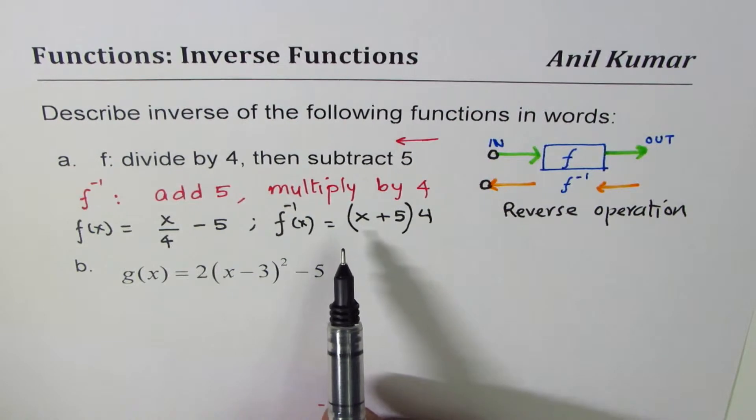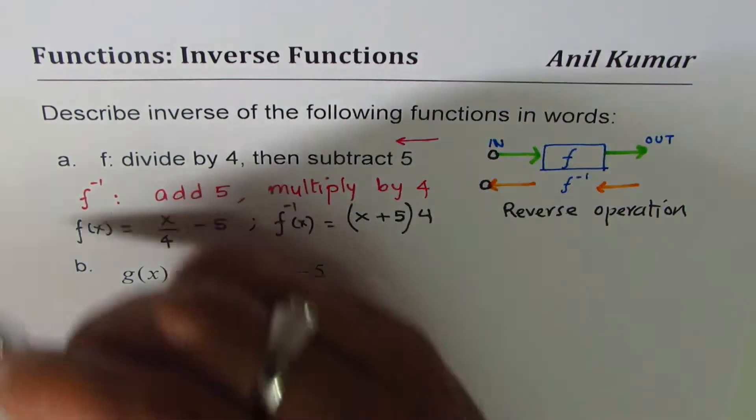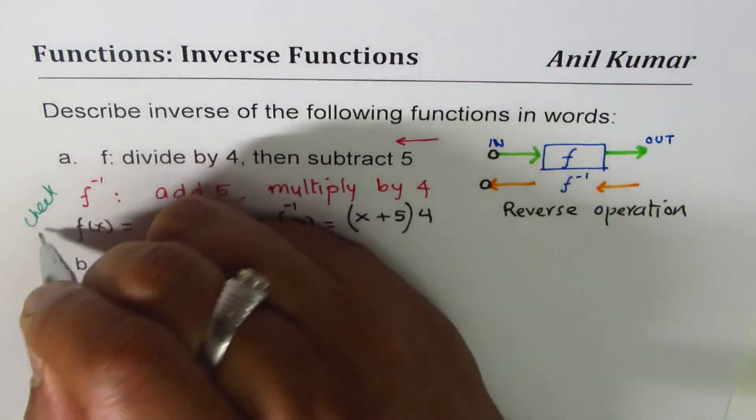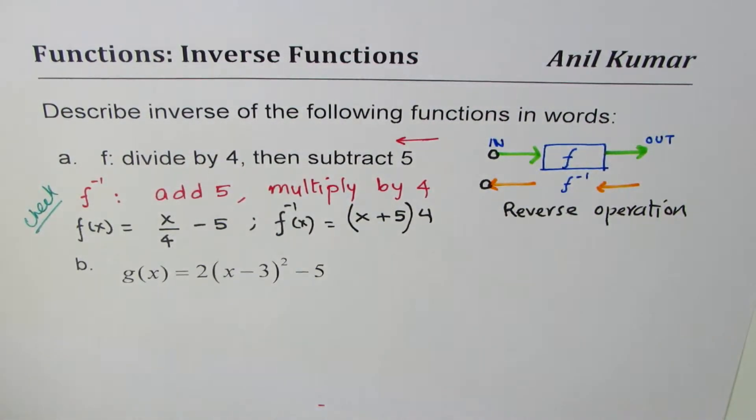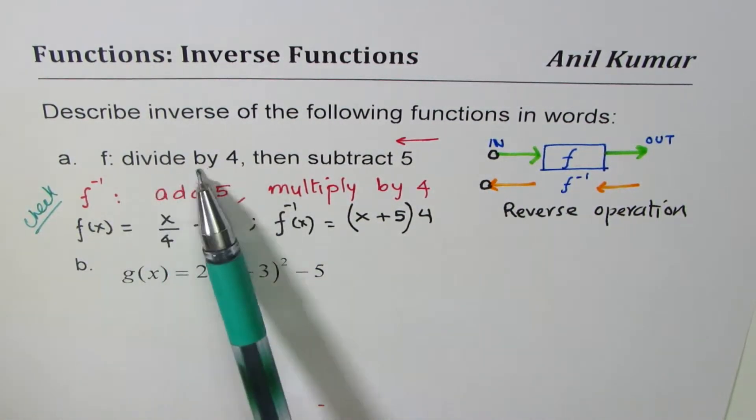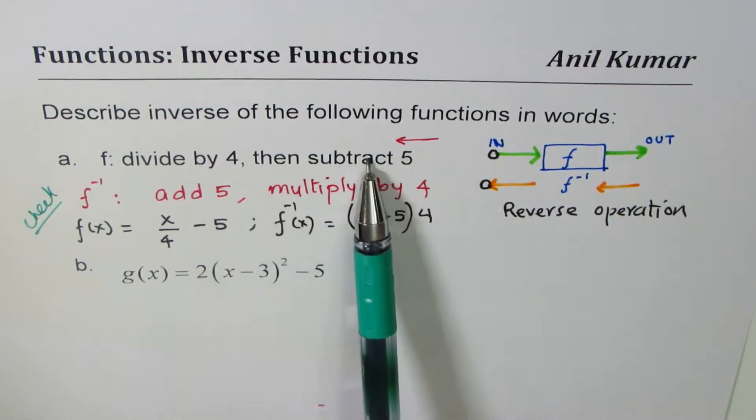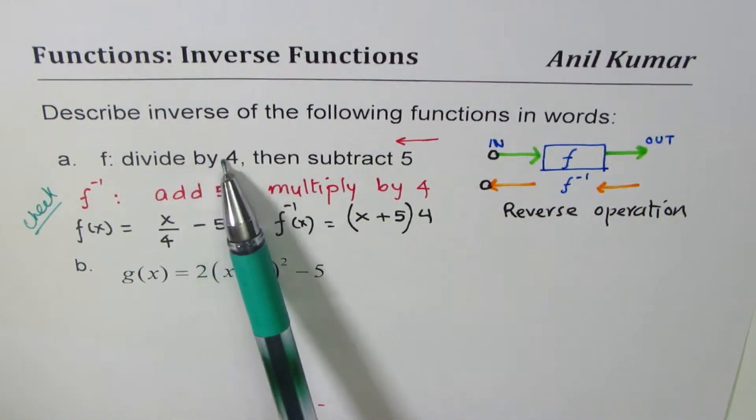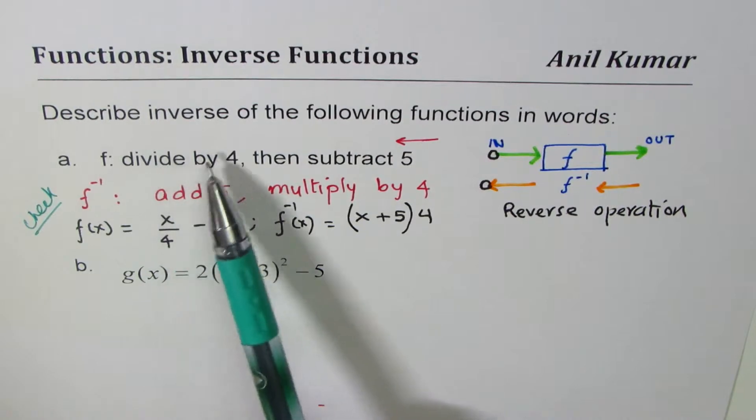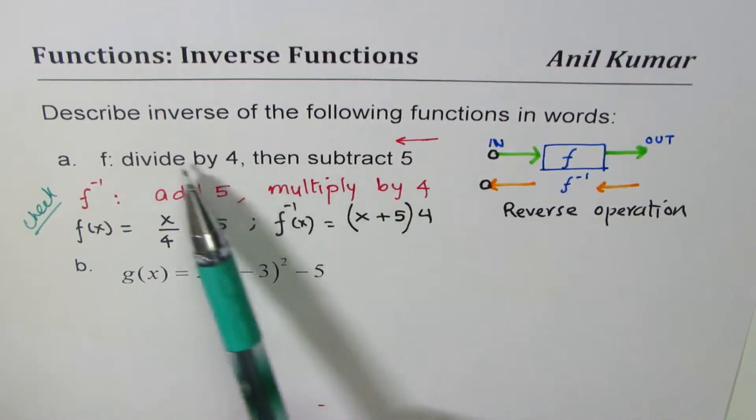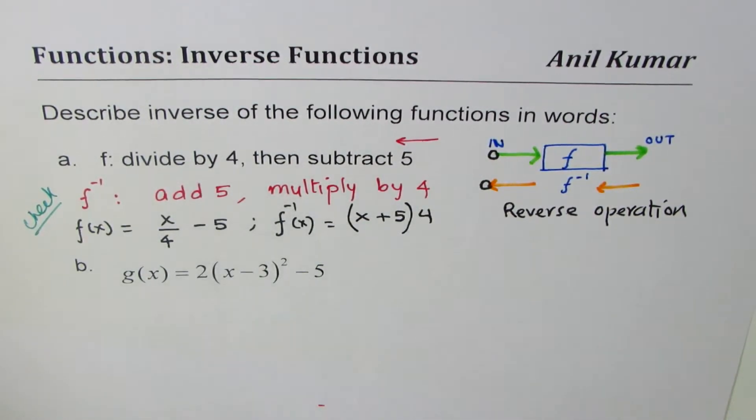What you can do is, you can check. Does it work? But see how simple it is. Divide by 4, then subtract, add 5, then divide by 4, then multiply by 4. So add 5, and then multiply by 4. So that will give you the inverse of the function, algebraically, we can write like this.